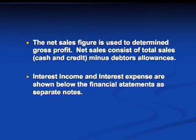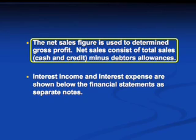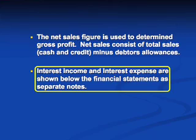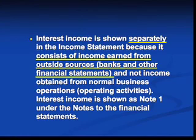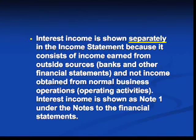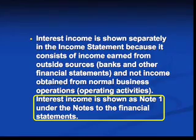The net sales figure is also used to determine the gross profit. Net sales consist of your total sales — made up of your cash and credit sales — minus your debtors allowances. The interest income and interest expense are shown in the financial statements as separate notes — note one and note two. Interest income is shown separately because it consists of income earned from outside sources such as banks and other financial institutions, and not from normal business operations. It is shown as note number one under the notes to the financial statements.